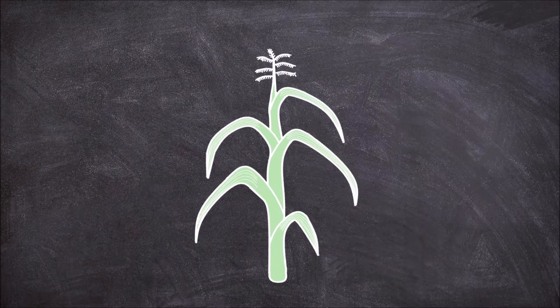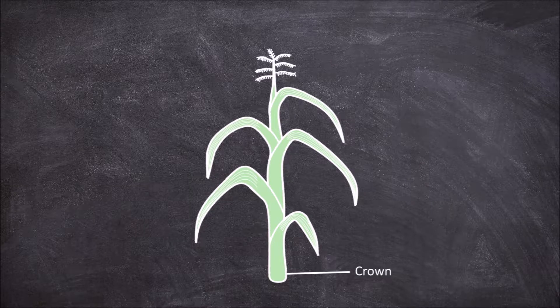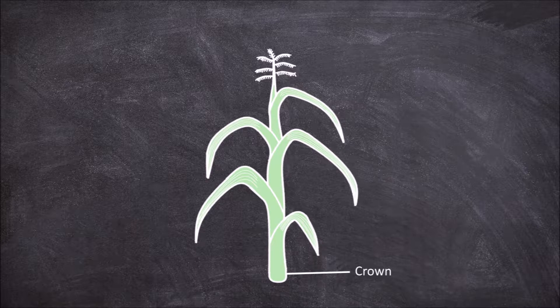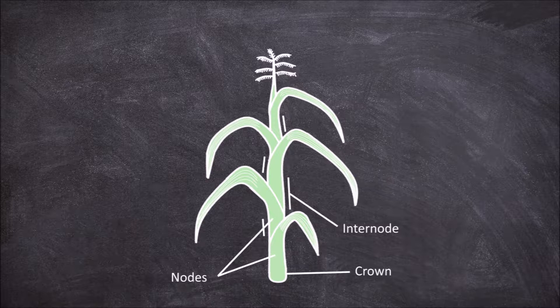The monocot stem is usually herbaceous but in some species can be woody. The base of the stem is called the crown. From here the stem extends upwards in a series of nodes and internodes. The stem is usually unbranched.